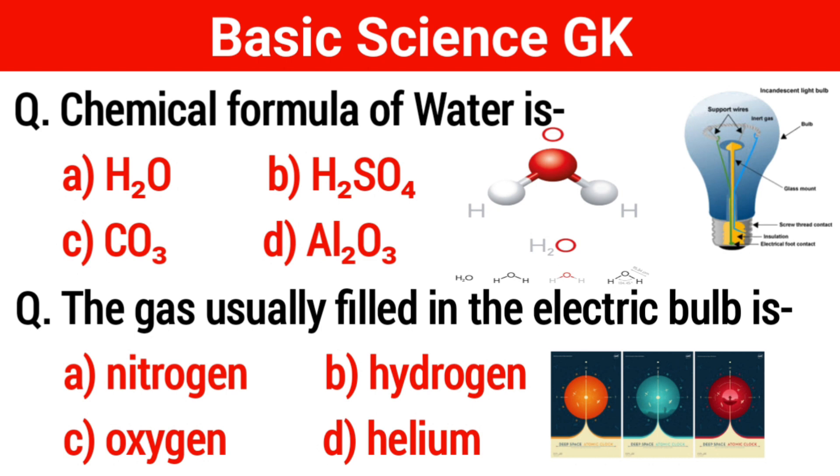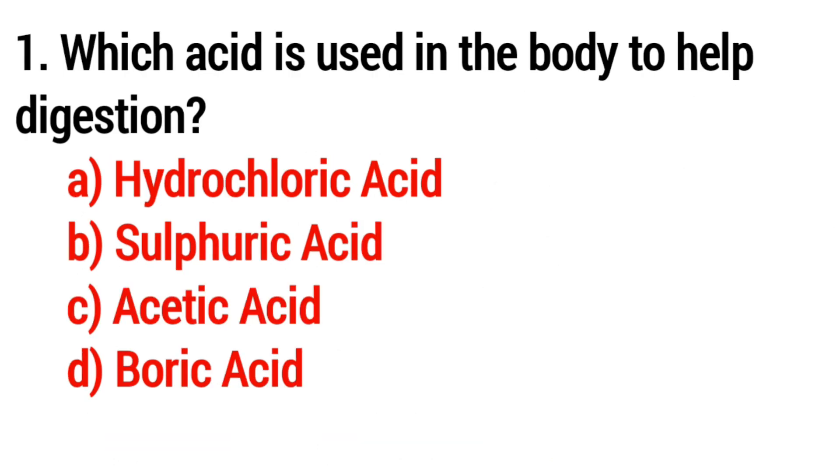Our first question: Whose acid is used in the body to help digestion? Option A: hydrochloric acid, Option B: sulfuric acid, Option C: acetic acid, Option D: boric acid. The correct answer is Option A, hydrochloric acid.